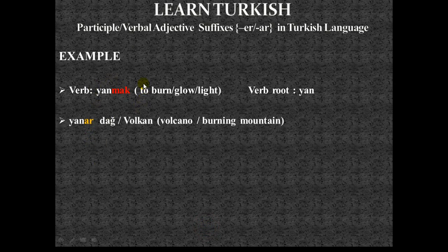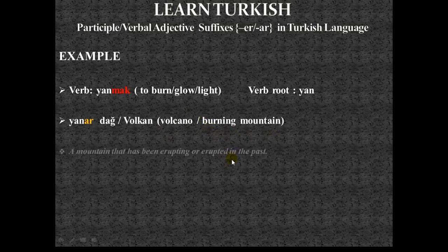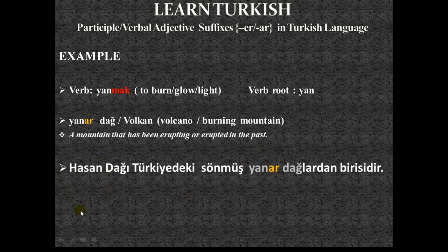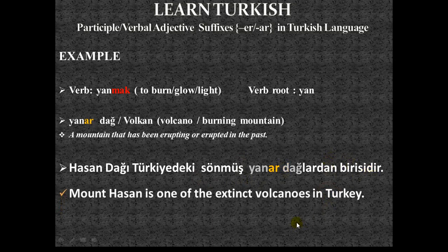The next verb is 'yanmak,' which translates as to burn, glow, or light. The verb root is 'yan,' giving the verbal adjective 'yanar.' 'Yanardağ' means volcano — very similar in sound to the English word 'volcano,' literally meaning burning mountain. Example: 'Hasan Dağı Türkiye'deki sönmüş yanardağlardan birisidir' — Mount Hasan is one of the extinct volcanoes in Turkey. 'Sönmüş' here means extinct, so 'sönmüş yanardağ' means extinct volcano.